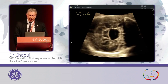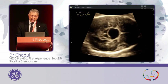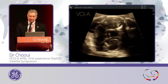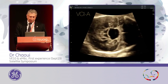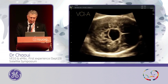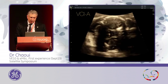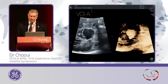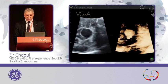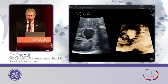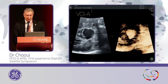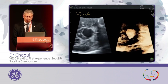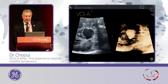Then you can use the VCI-A plane as a slice, and you see the relationship to the cerebral peduncles. I was trying to get a view to the chiasma, but I was hindered by shadowing at this stage. And then you can add VCI-A with an inversion mode to see the shape of this structure with the volume. I could have also calculated the volume of this cyst with Sono-AVC.